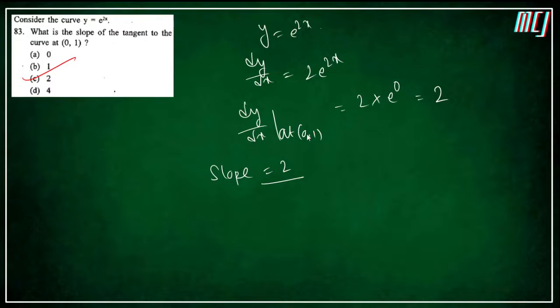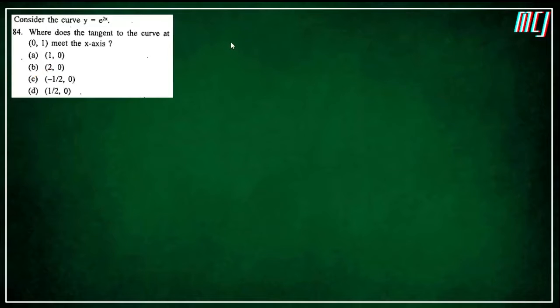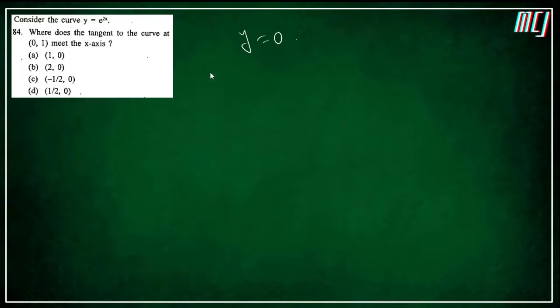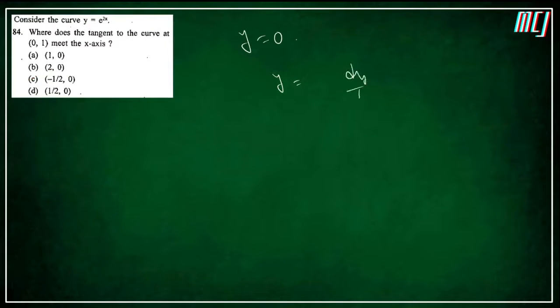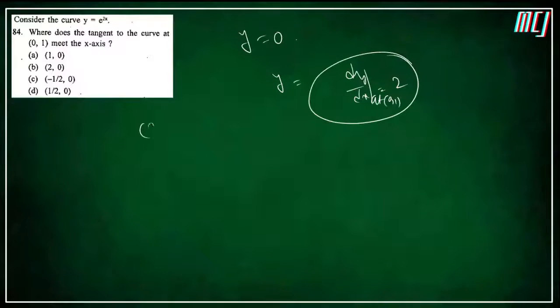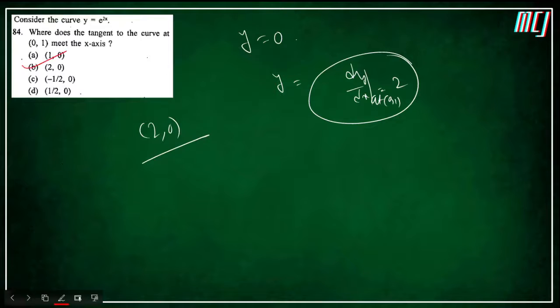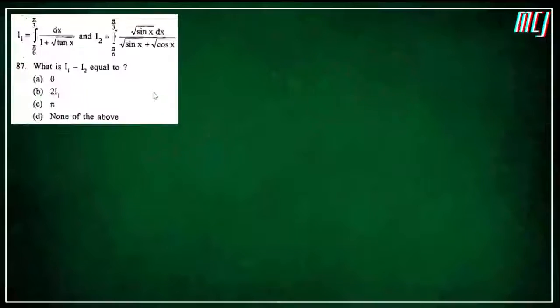Next question: where does the tangent to the curve at (0,1) meet the x-axis? Slope is 2 at point (0,1). Tangent line: y − 1 = 2(x − 0), so y = 2x + 1. At x-axis y = 0: 0 = 2x + 1, x = −1/2. The tangent meets the x-axis — देखो slope 2 है और point (0,1) है, तो x-axis पर y=0 होगा, point (−1/2, 0) पर meet होगी।